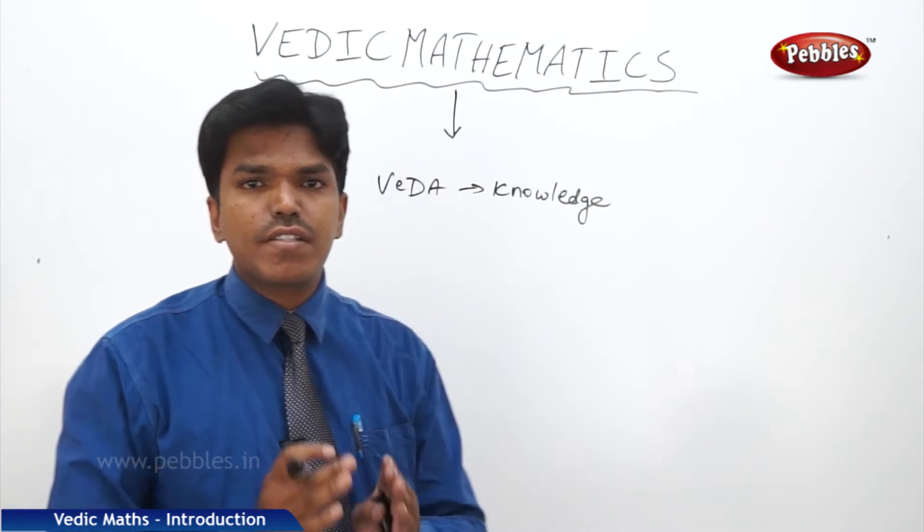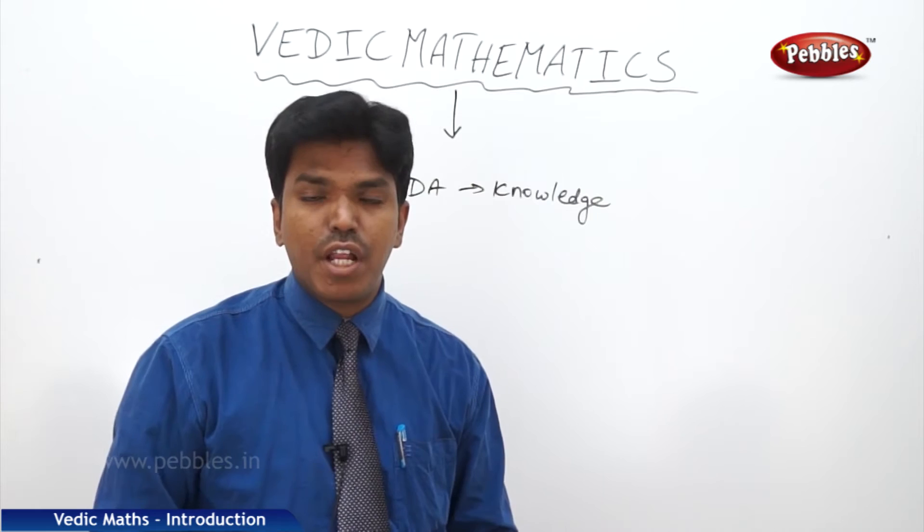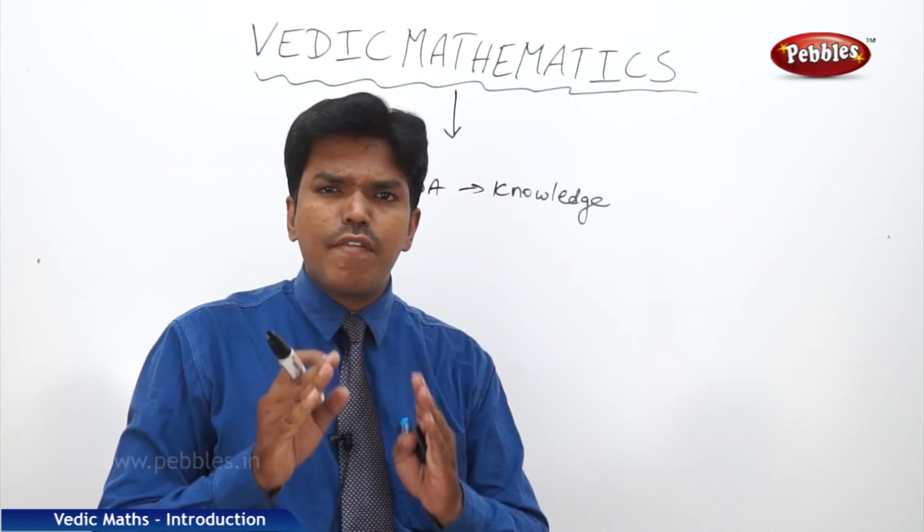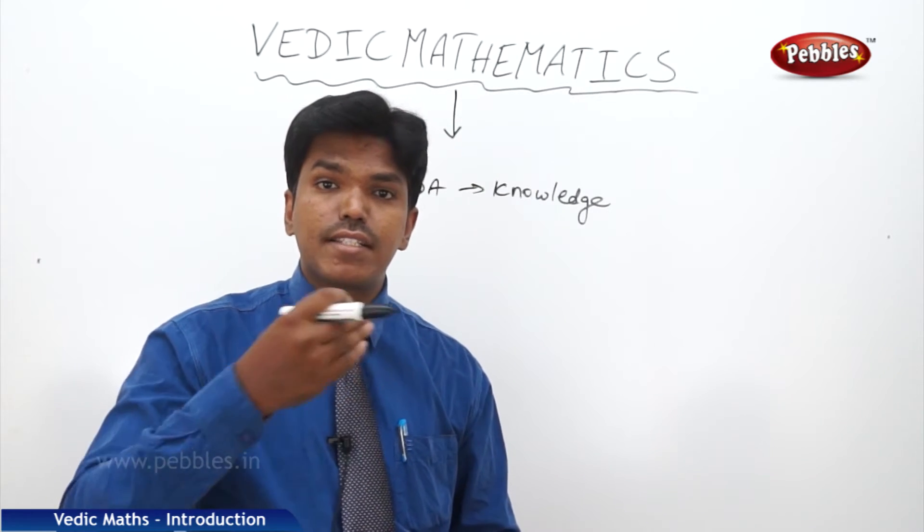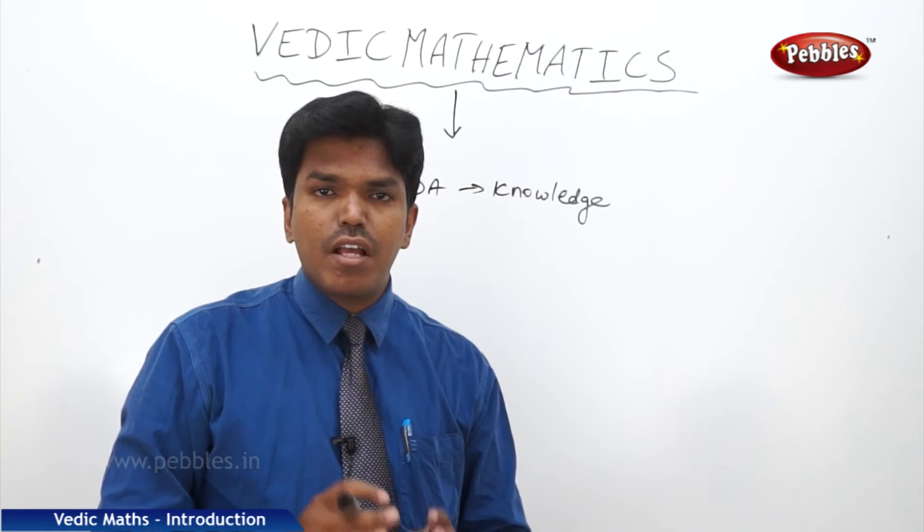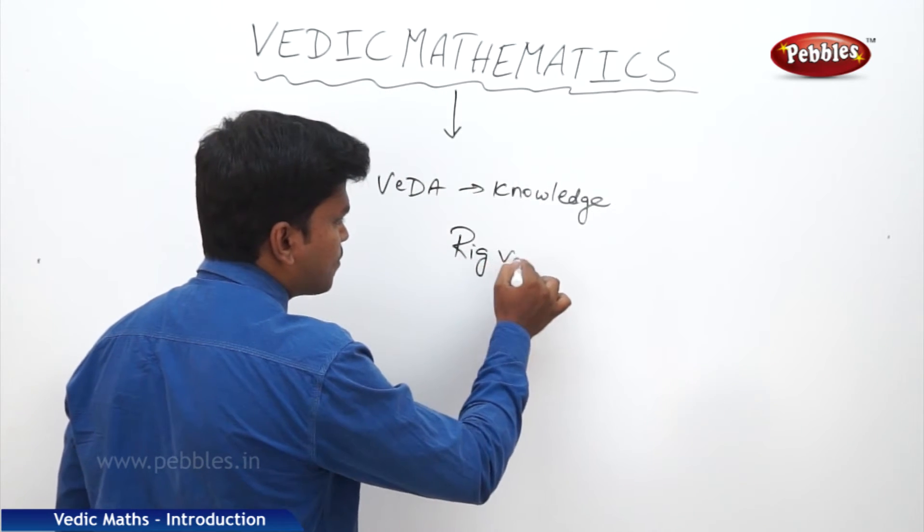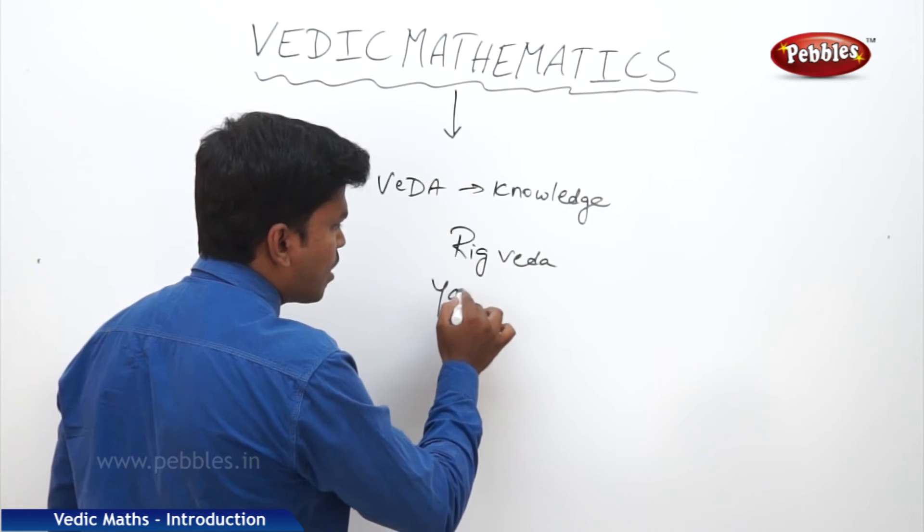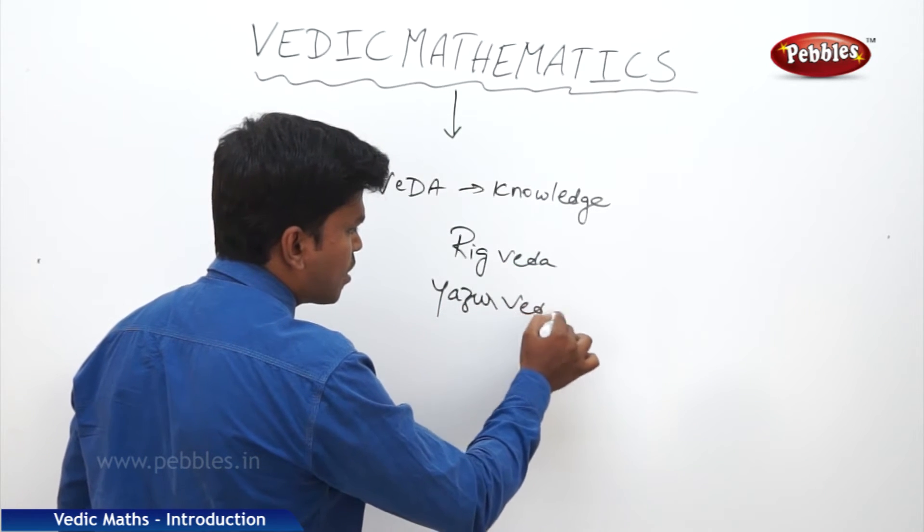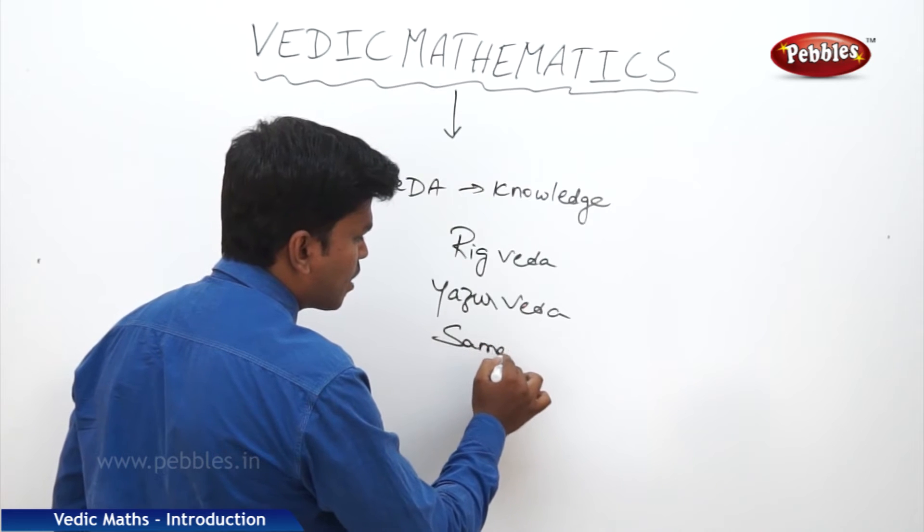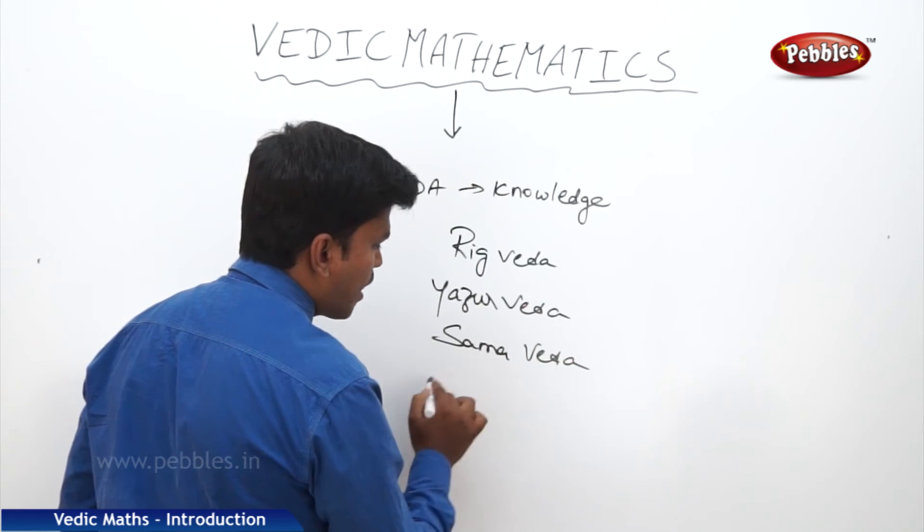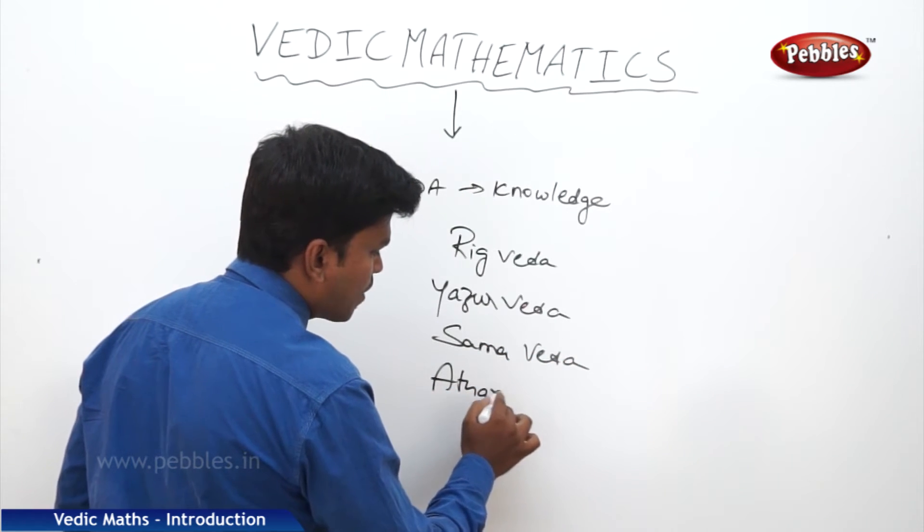We have four Vedas. These Vedas are the ancient scripts written by our forefathers. There is everything in Vedas, whatever you want that is there in the Vedas. What are the four Vedas we have? Rig Veda, Yajur Veda, Samaveda, and finally Atharvana Veda.